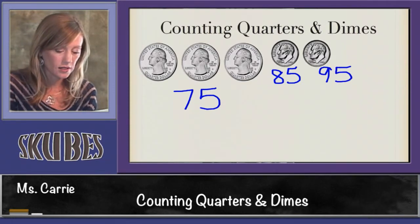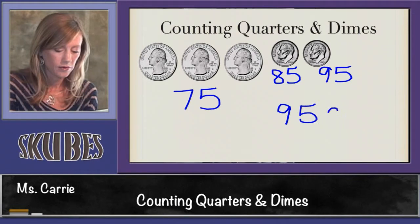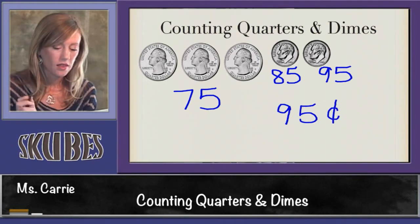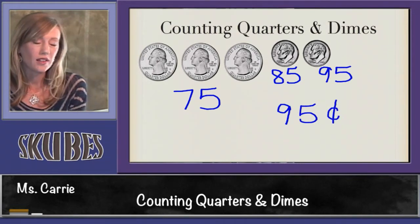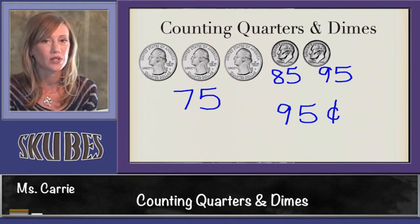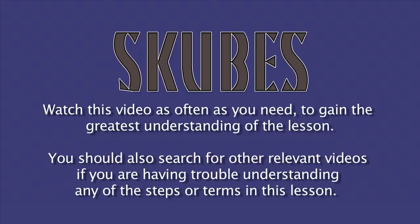This group of coins is worth 95 cents. This concludes our lesson today on counting quarters and dimes.